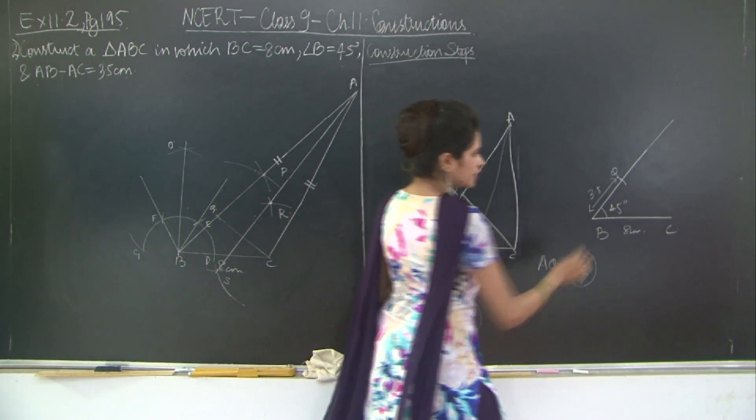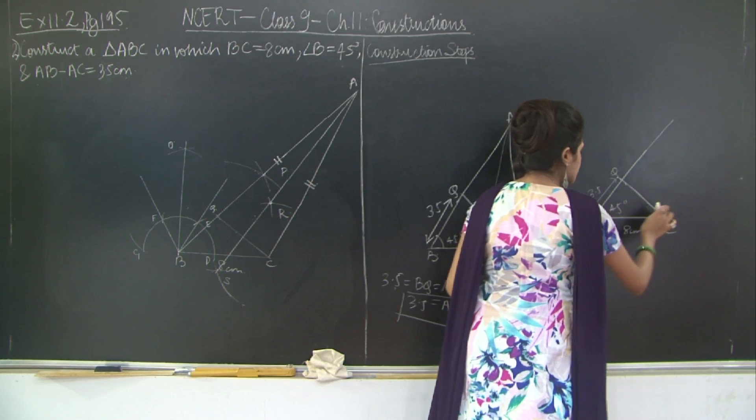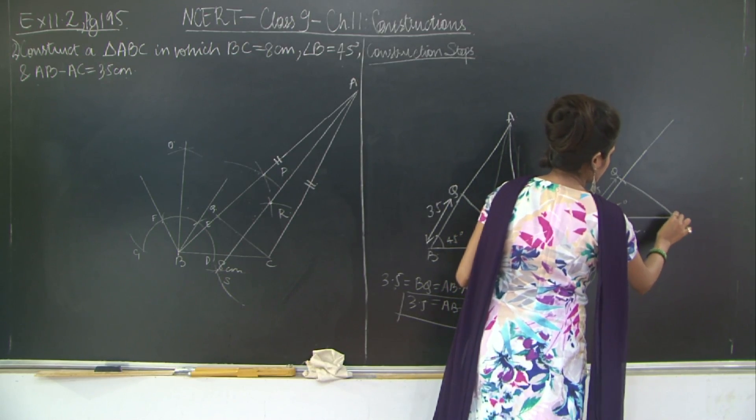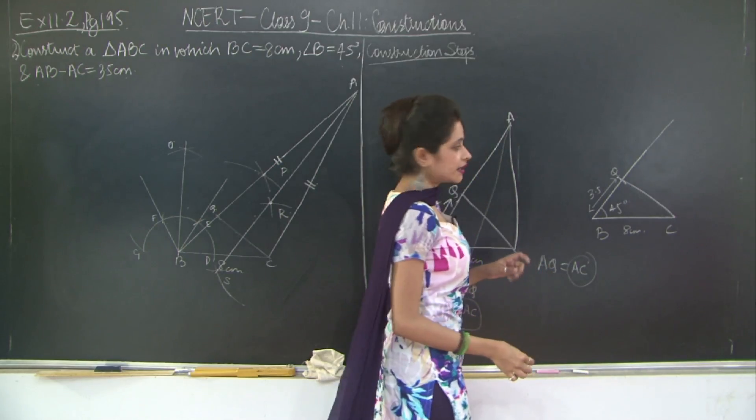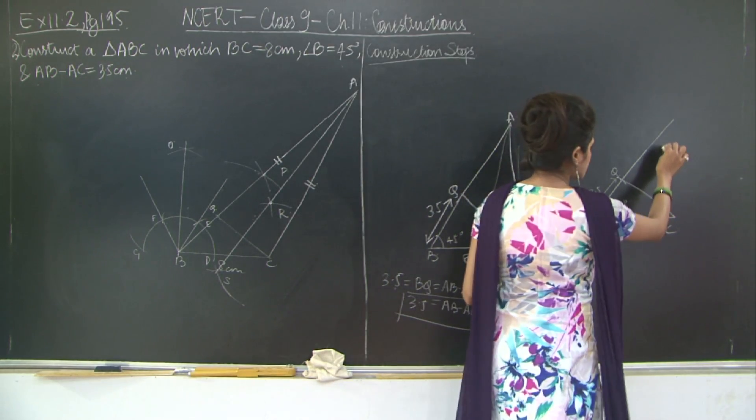Right? And then we joined Q to C. So this was QC, we joined it. And then we drew the perpendicular bisector of QC.